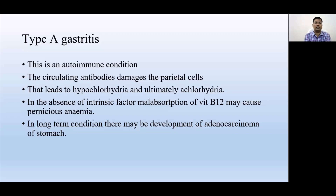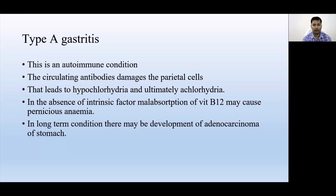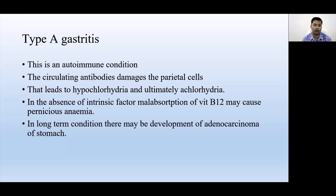The long-term effect of this autoimmune gastritis is that the damaged parietal cells also fail to secrete intrinsic factor, which is responsible for absorption of vitamin B12. The patient is therefore unable to absorb vitamin B12, leading to depression of RBC production and causing pernicious anemia. Long-term hypochlorhydria may also lead to the development of adenocarcinoma of the stomach.